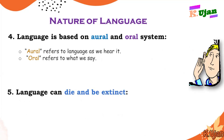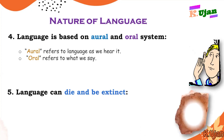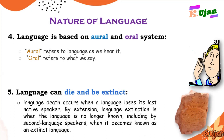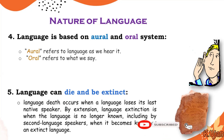Number five: language can die and be extinct. Language sometimes becomes extinct when there is no first language speaker. Language death occurs when a language loses its last native speaker. By extension, language extinction is when the language is no longer known, including by second language speakers, and it becomes known as an extinct language. When there are no first speakers of any language, that is known as the extinction of the language.